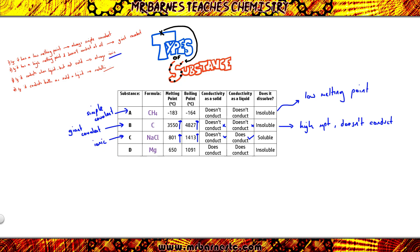And then finally, substance D, high melting point and boiling point. It conducts when solid and as a liquid. Therefore, it's going to be metallic.